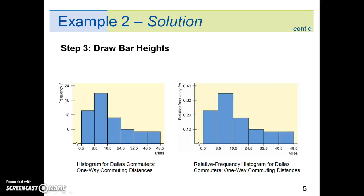In step 3, we draw bar height. For each class of the frequency table, make a corresponding bar with horizontal width extending from the lower boundary to the upper boundary of the respective class. For a histogram, the height of each bar is the corresponding class frequency. For a relative frequency histogram, the height of each bar is the corresponding relative frequency. Notice that the basic shapes of the graphs are the same. The only difference involves the vertical axis: the vertical axis of the histogram shows frequencies, whereas that of the relative frequency histogram shows relative frequencies.